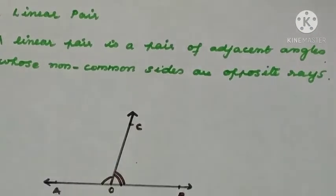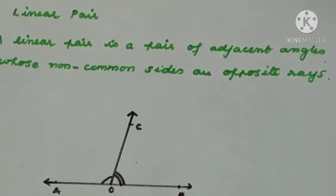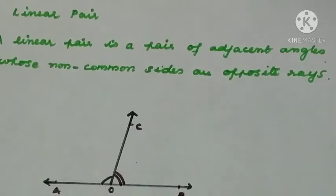Good morning children. This video is for January 19th. We have already completed adjacent angles as part of lines and angles. The next topic is linear pair. A linear pair is a pair of adjacent angles whose non-common sides are opposite rays. You are already familiar with the term non-common arms or sides of an angle.